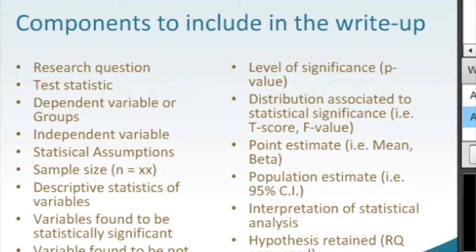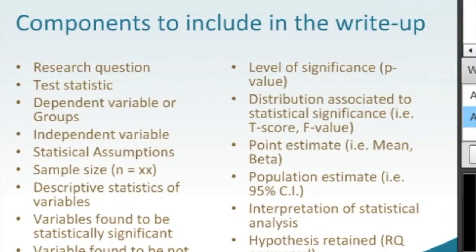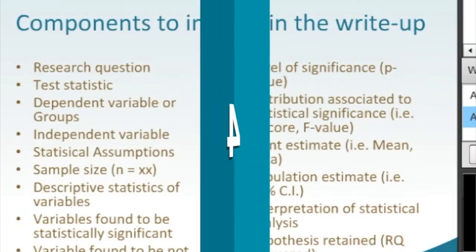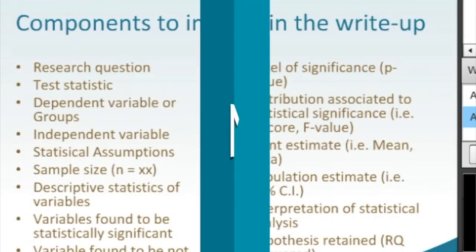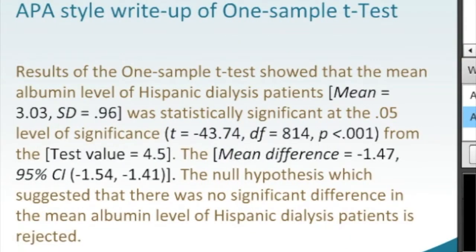Here's a very short APA style write-up of a one-sample t-test. The results of the one-sample t-test show that the mean albumin level of Hispanic dialysis patients — our point estimate mean equals 3.03 with standard deviation 0.96 — was statistically significant at the 0.05 level of significance, which gives us our level of precision.